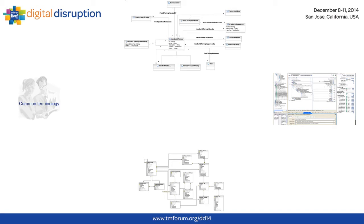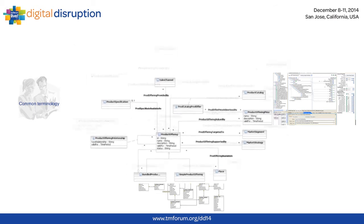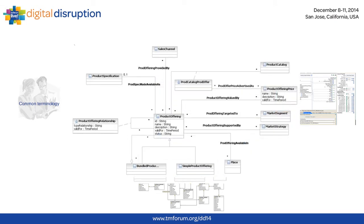Next up is the framework's use as a starting point for an information model. The framework's development has covered about 14 years. It conservatively represents at least 50 person-years of effort and includes a collective subject matter knowledge of hundreds of members. What is the cost of 50 person-years of effort to your business? What is the opportunity cost lost to develop such a model from scratch? And the model continues to be enhanced to support new technologies such as network function virtualization, or NFV.